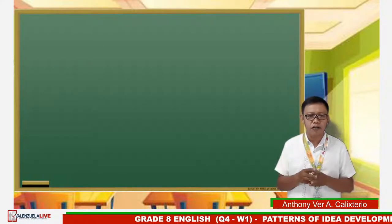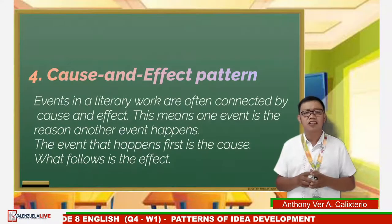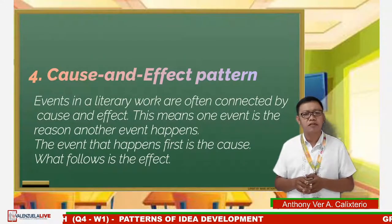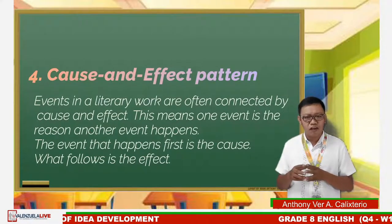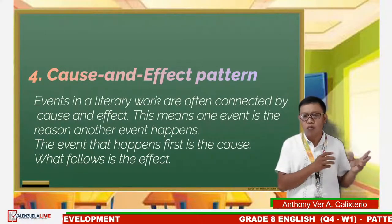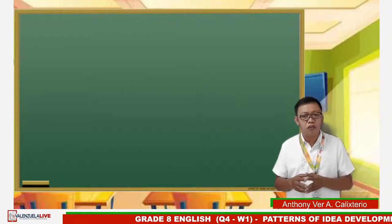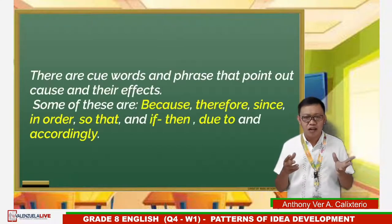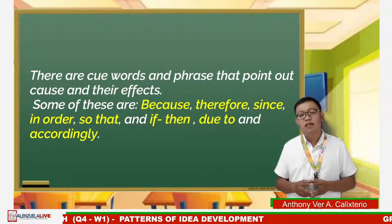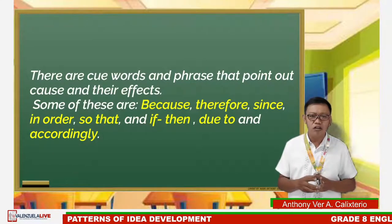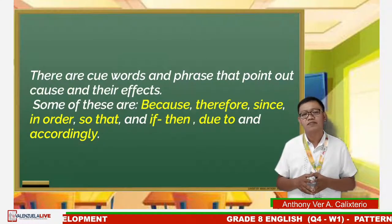The fourth and last pattern for today: the cause and effect pattern. Events in literary works are often connected by cause and effect — one event is the reason another event happens. The event that happens first is the cause, while what follows is the effect. It can be an event or a change in the way a character behaves or thinks. Signal words and phrases that point out cause and effect include: because, therefore, since, in order, so that, if/then, due to, and accordingly.